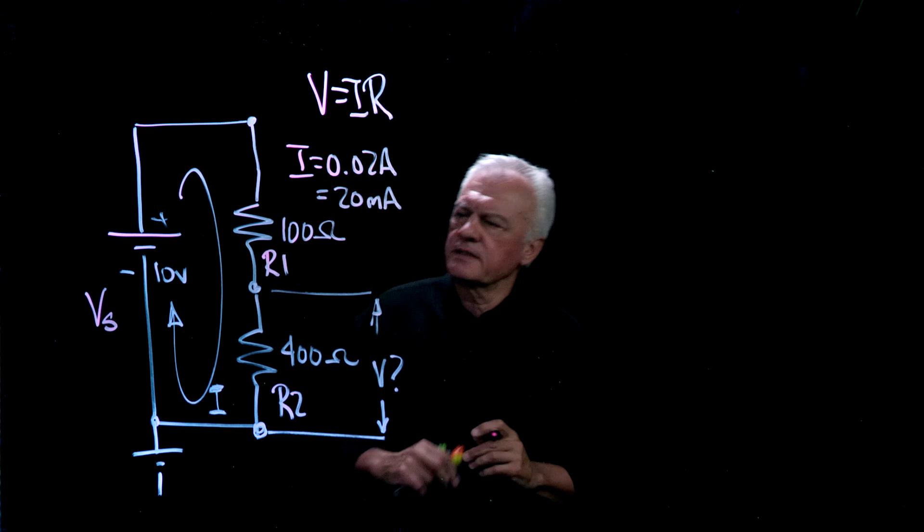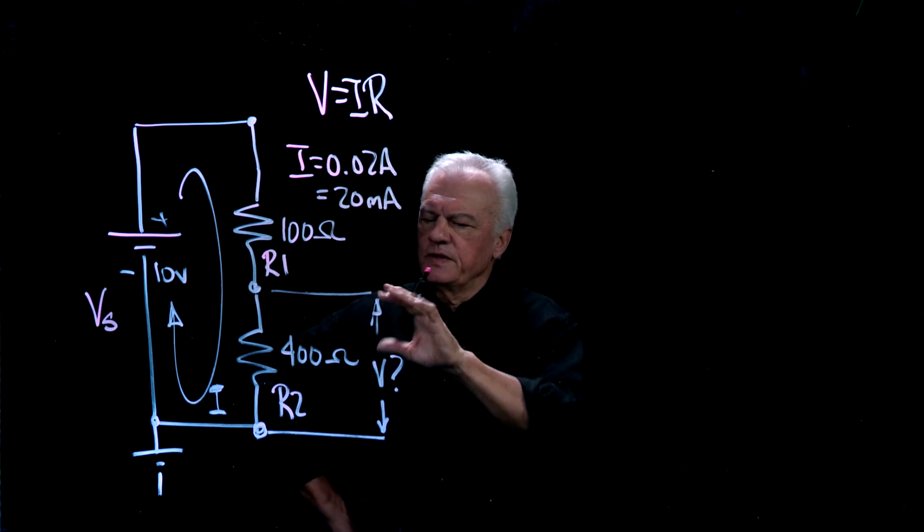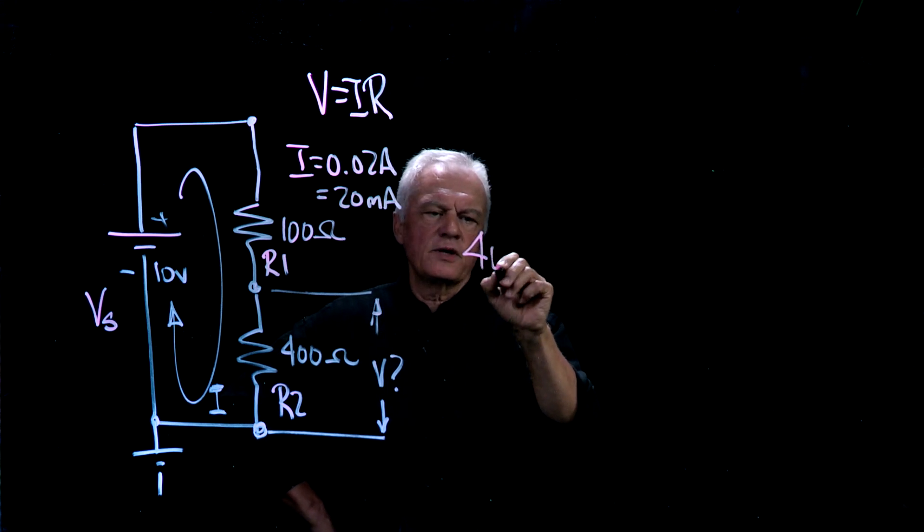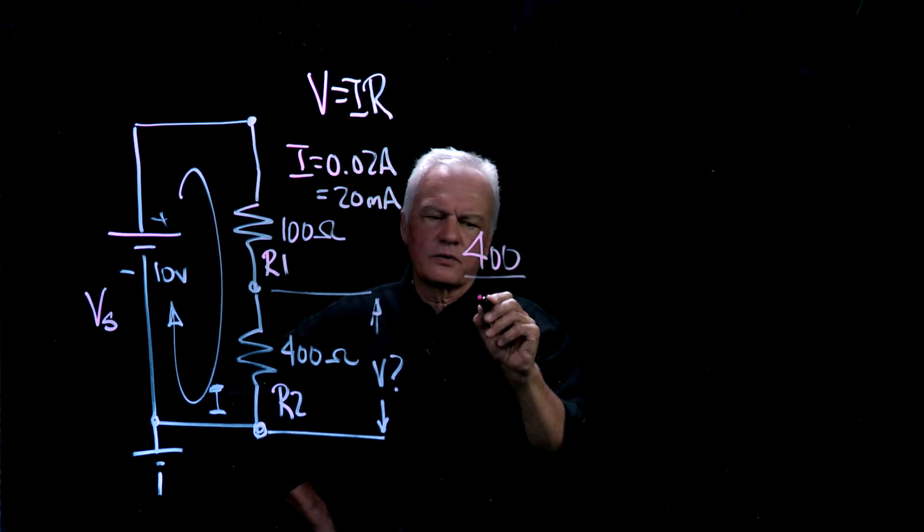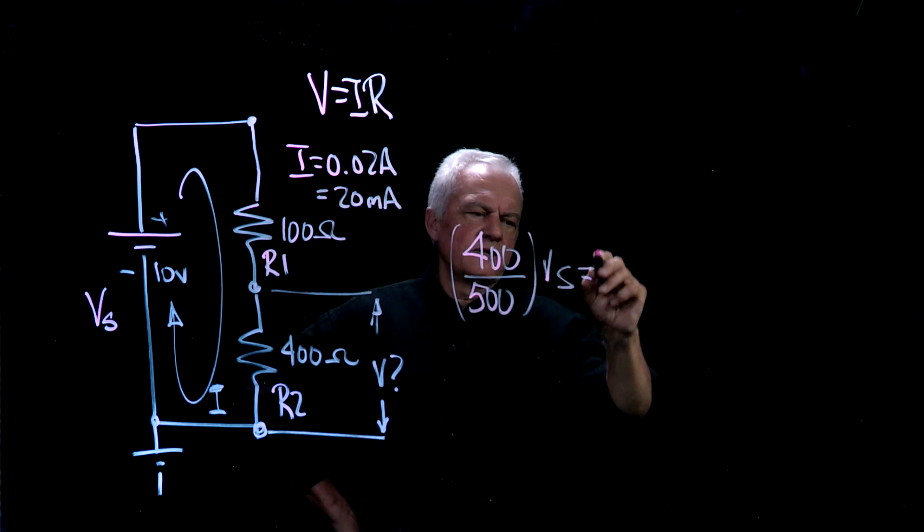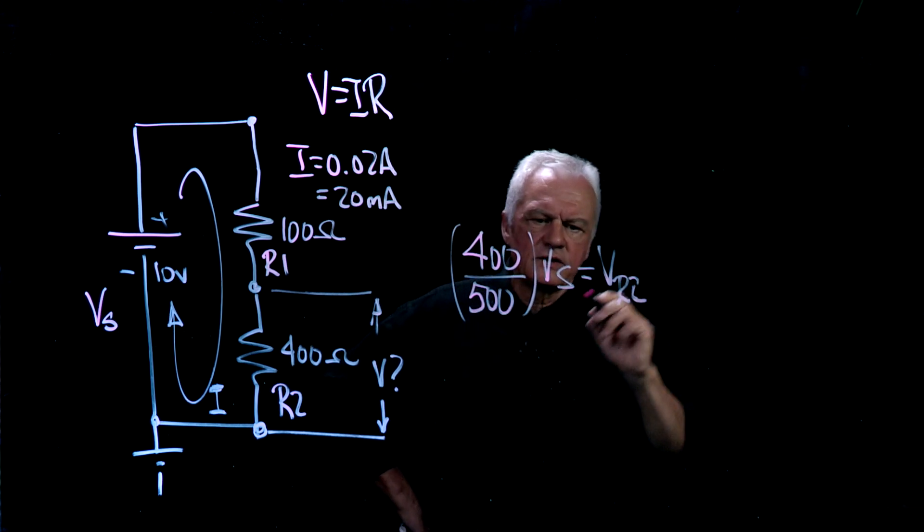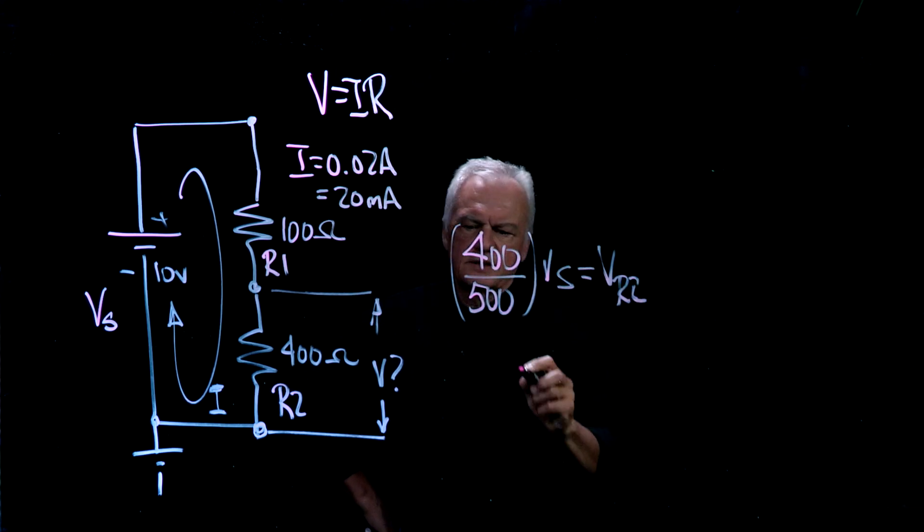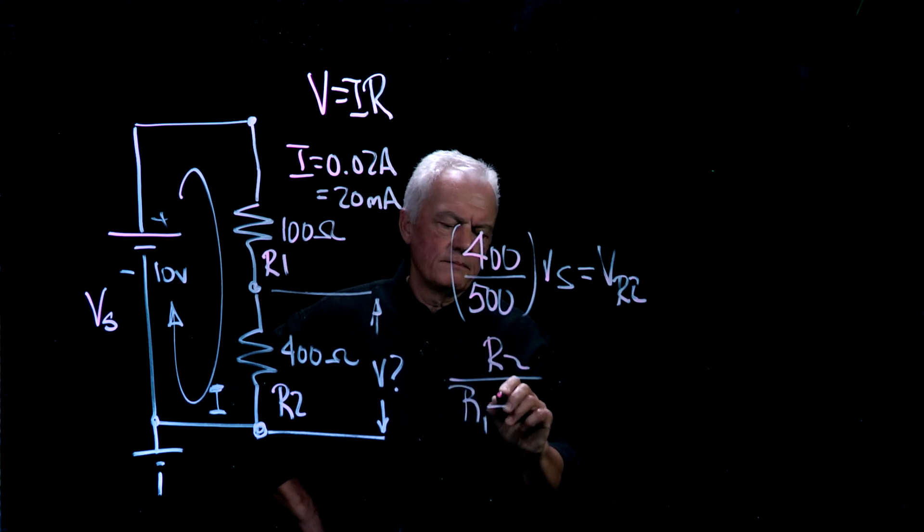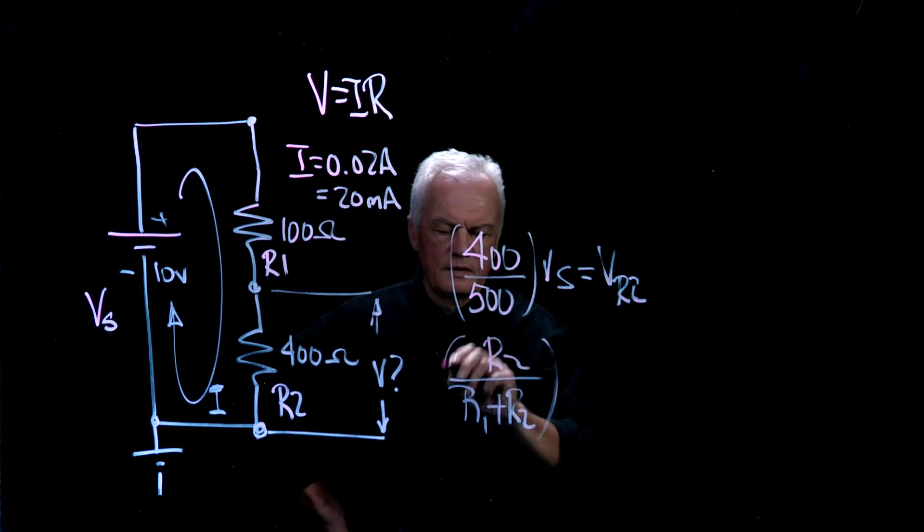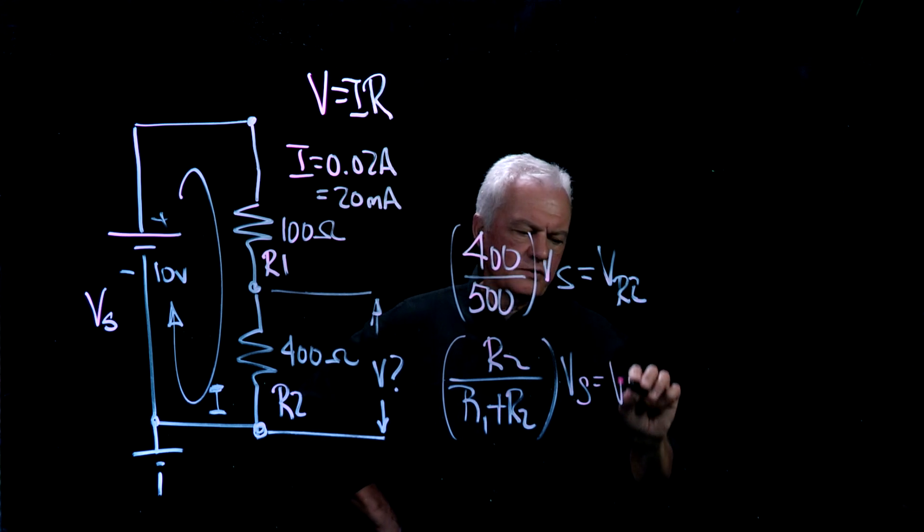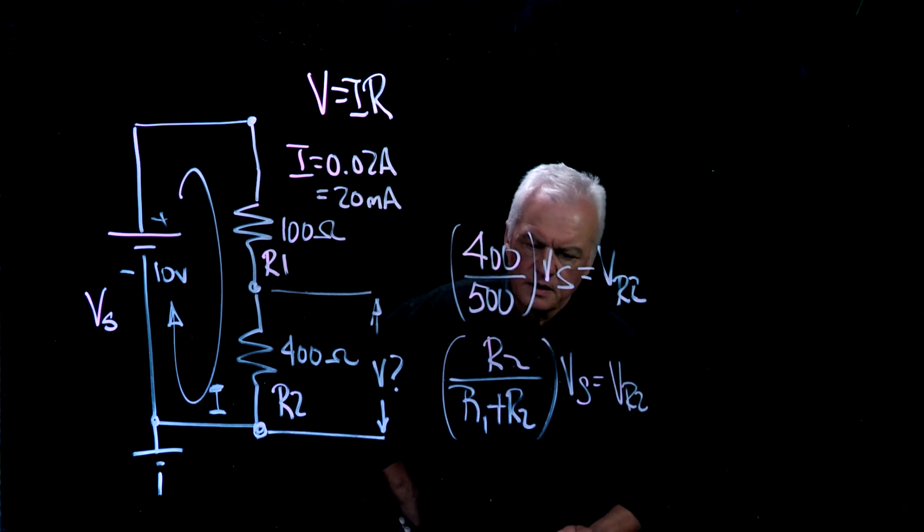So if we look at this, we say, okay, this is some percentage of that, but they have to add up to the total. In other words, if I have 400 ohms over a total of 500 ohms, and I multiply that by the source, I will get the voltage across R2. Really? How do you do that? In other words, what I said was, if I take R2 and divide it by R1 plus R2 and multiply it by the source voltage, I will get the voltage across R2.